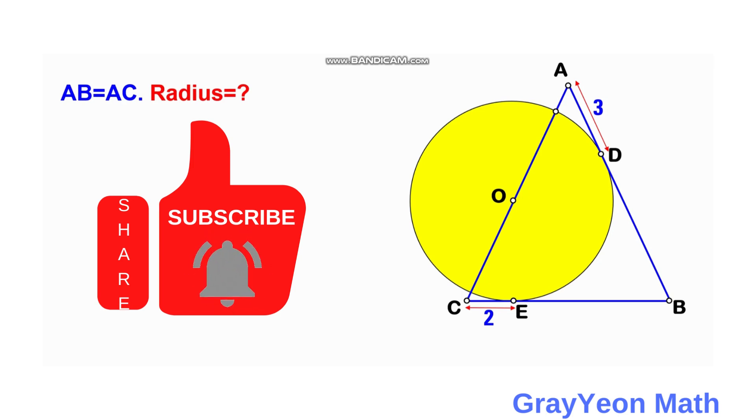It is given that the length of AB equals AC, which indicates that this triangle is an isosceles triangle with two sides equal. The distance from the topmost vertex to the tangent point D is three units and the distance from C to the tangent point E is two units. We are required to find the radius of the circle.